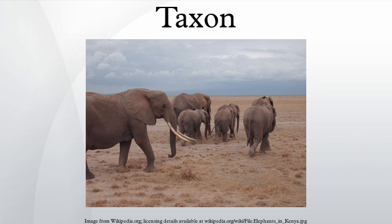A taxon can be assigned a taxonomic rank, usually when it is given a formal name. Phylum applies formally to any biological domain, but traditionally it was always used for animals, whereas division was traditionally often used for plants, fungi, etc. A prefix is used to indicate a ranking of lesser importance: the prefix super indicates a rank above, the prefix sub indicates a rank below. In zoology, the prefix infra indicates a rank below sub. For instance, among the additional ranks of class are superclass, subclass, and infraclass. Rank is relative and restricted to a particular systematic schema.